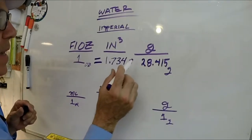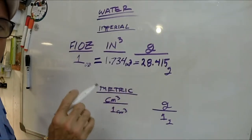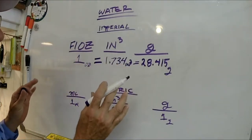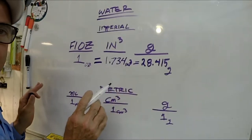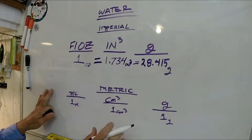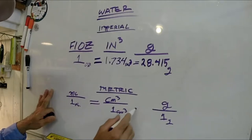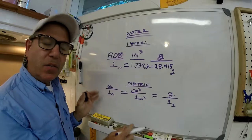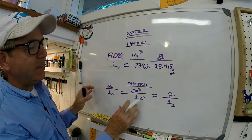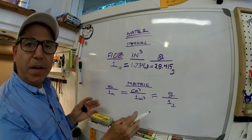And that equals 28.415 grams. So you can see that's a little bit heavy on the decimals. So if you slide on down to the metric system, one milliliter equals one cubic centimeter which equals one gram.